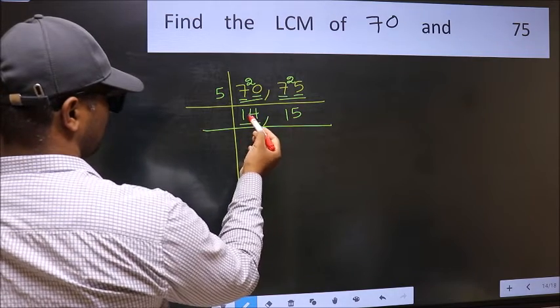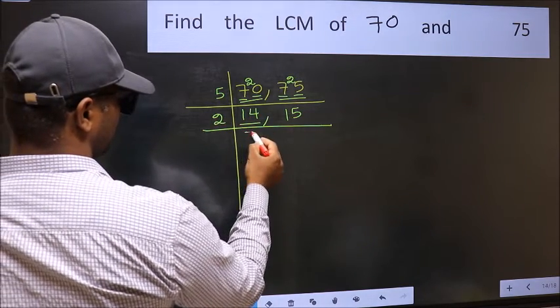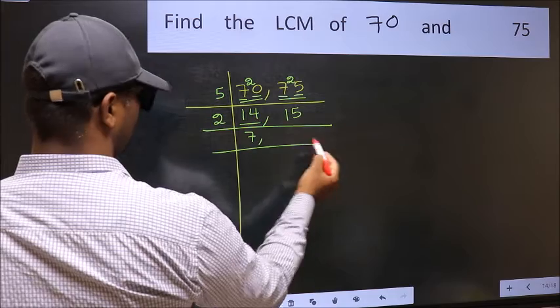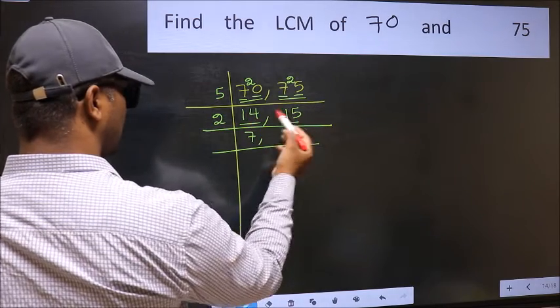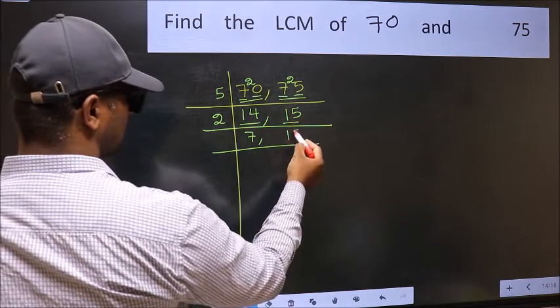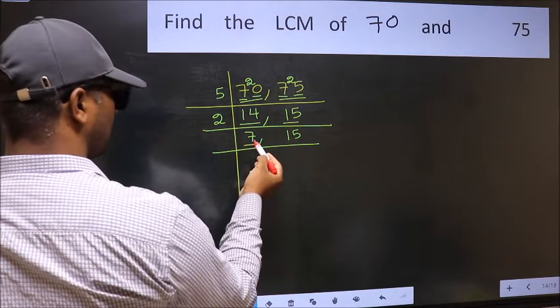Now here we have 14. 14 is 2 sevens 14. The other number 15 is not divisible by 2 so you write it down as it is.